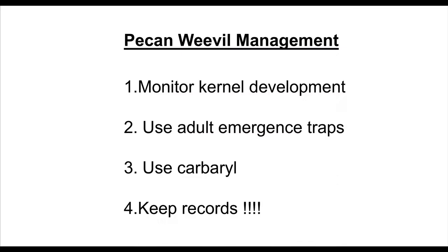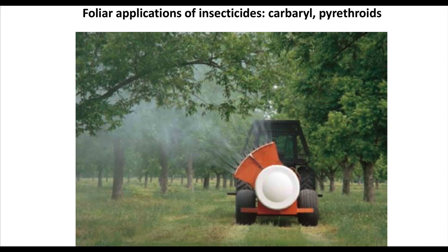In our management program, we monitor kernel development, as pecans need to be in the dough stage before egg laying can successfully occur. We use adult emergence traps to monitor the cycle of emergence, we use insecticides, and we keep records on our success. Management is usually based on foliar applications of insecticides in either a carbaryl or a pyrethroid based product.